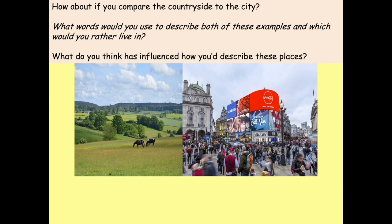Let's look at a more generic example. Here there are two images — on the left, the countryside, and on the right, the city. Think about how you would describe both of these images and which you would rather live in and why. On your worksheet, annotate the images with at least five words to describe both types of place — urban and rural — and then summarise whether you would prefer to live in an urban or rural area and why.